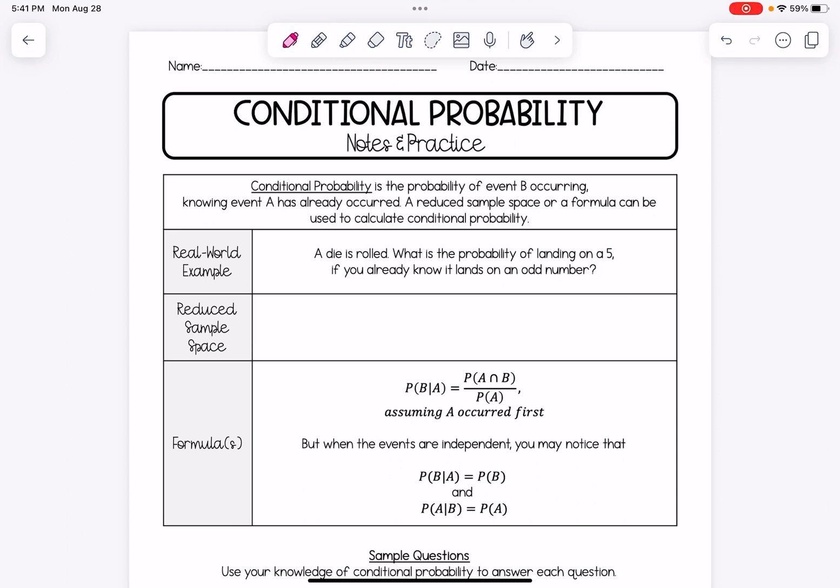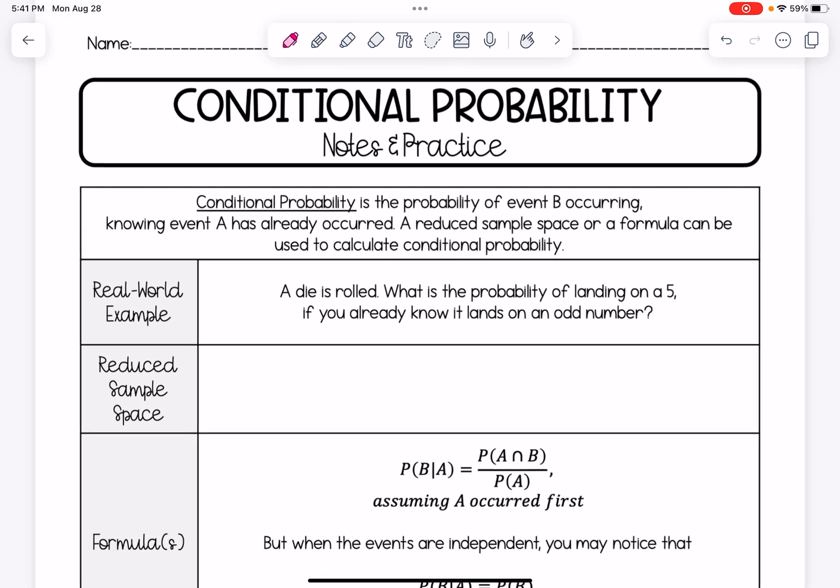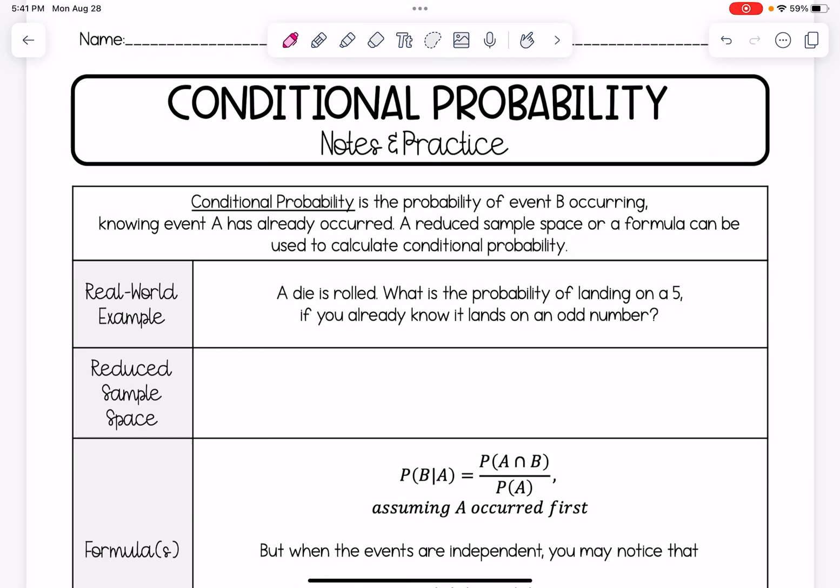This video is going to go over conditional probability. Conditional probability is the probability of event B occurring, knowing that event A has already occurred. We could calculate conditional probability by either using a reduced sample space or a formula. I'm going to really be recommending the reduced sample space option rather than memorizing a formula.